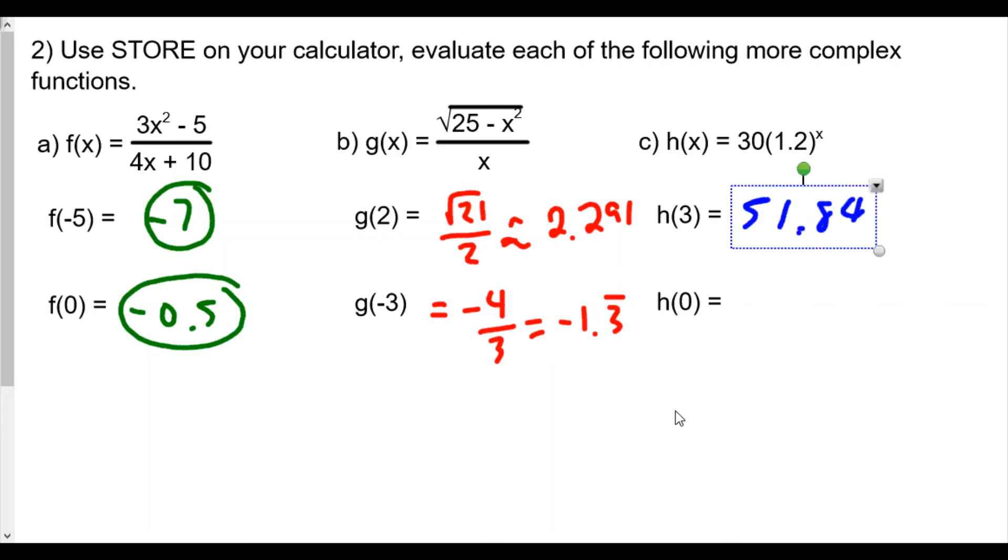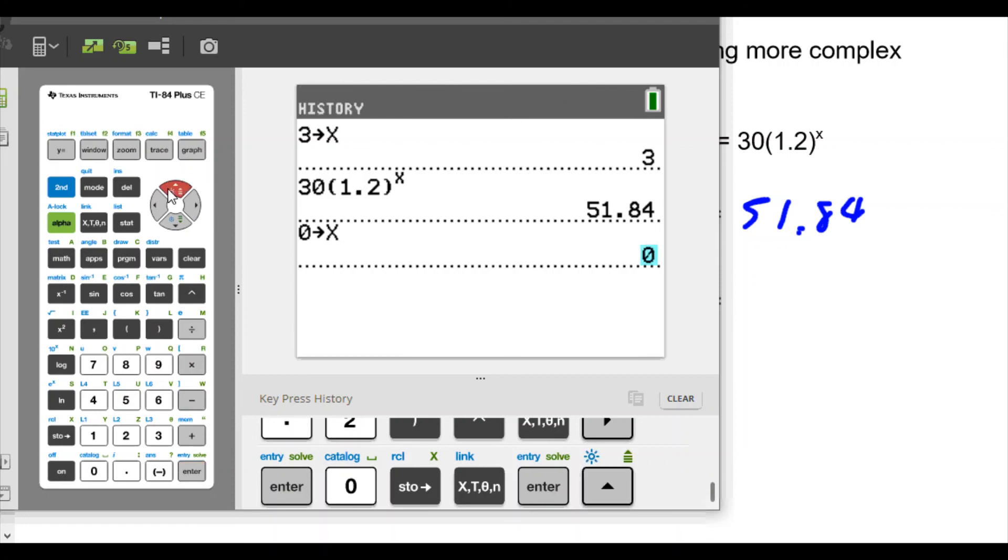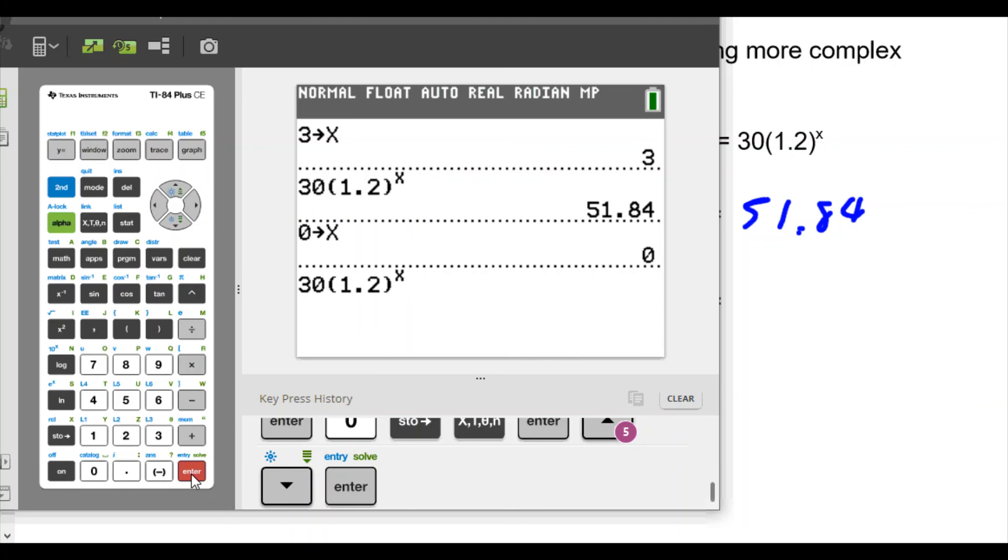And now for h of 0. Here we're going to type in 0, store x, enter. Now one of the things we know about the laws of exponents is that if you raise any number to the power of zero, except for zero, you have 1. So we're going to anticipate a value of 30. We hope so. Highlight, enter, and we're going to hit enter again. There we go, 30.